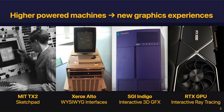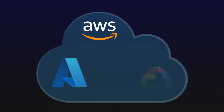High-powered computing systems have always played an important role in advancing what's possible in computer graphics. More compute power or more memory quickly translates into new experiences. Traditionally, if you wanted to get a faster graphics system, you had to shell out a lot of money or wait for a next-generation processor. But today, elastic cloud computing platforms make it possible for any user to access a huge amount of resources on demand.